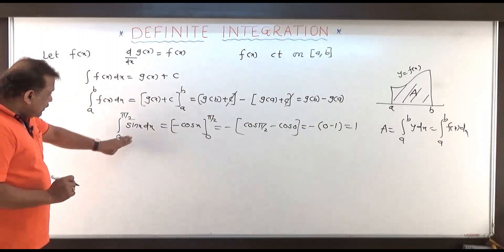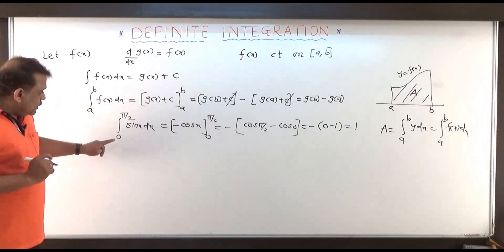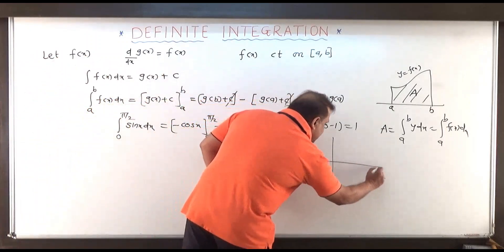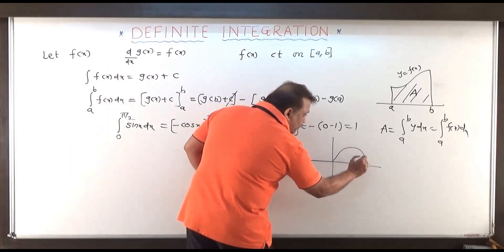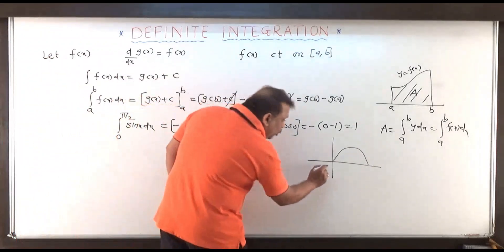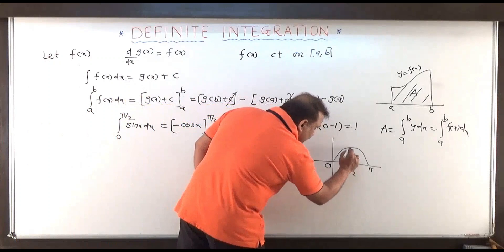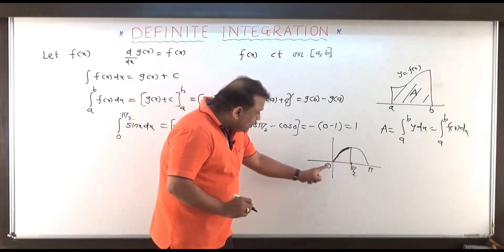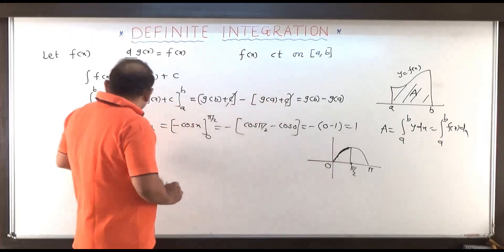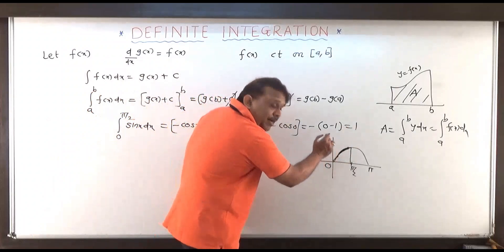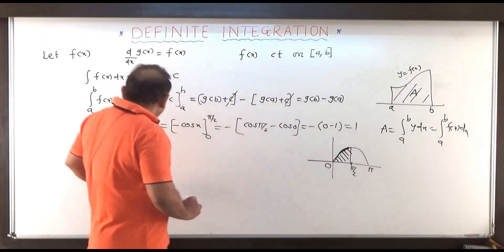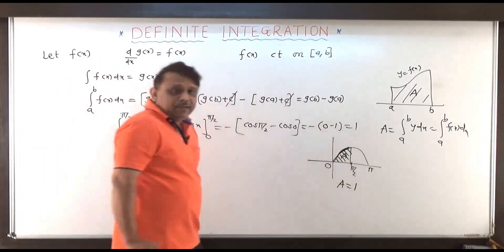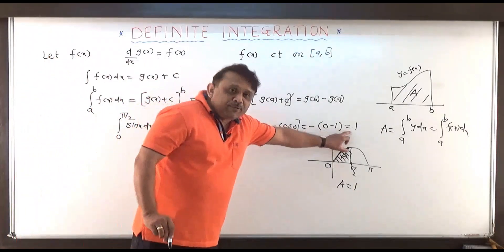For example, here I have shown one example: the integral from 0 to pi by 2 of sin x dx equals 1. We know the graph of sin x — it passes through the origin, and from 0 to pi the graph looks like this, with pi by 2 in the middle. If I consider the portion of the graph of sin x from 0 to pi by 2, this is y equal to sin x defined from 0 to pi by 2, whose definite integration value is 1. So the area given by this definite integration is 1. This area A is nothing but 1, and definite integration is nothing but the area under the curve.